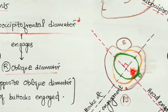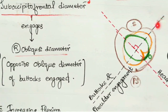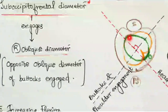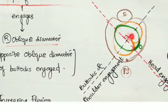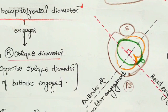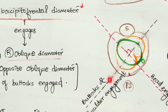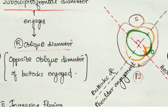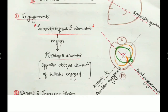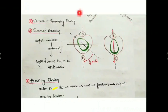The orange-colored buttocks have their long axis - the bi-trochanteric diameter - in one direction. The head, marked in green, has its engagement diameter just perpendicular to that of the buttocks. The head engages in the right oblique diameter, whereas the buttocks and shoulders engage in the left oblique diameter - just the opposite oblique diameter.